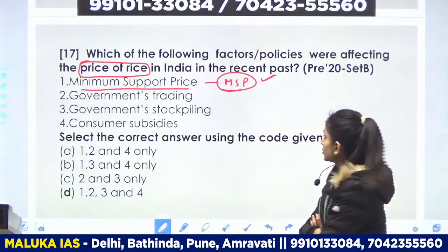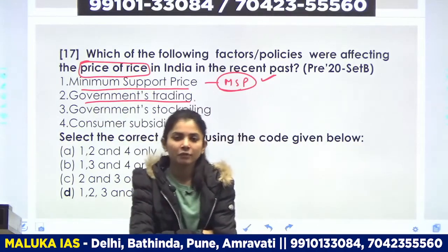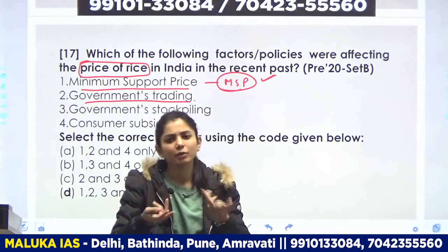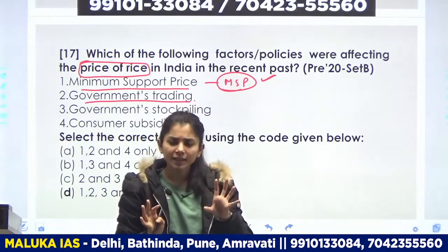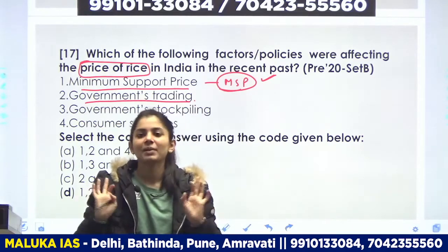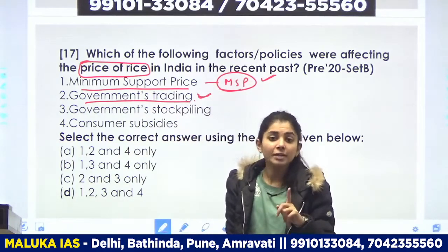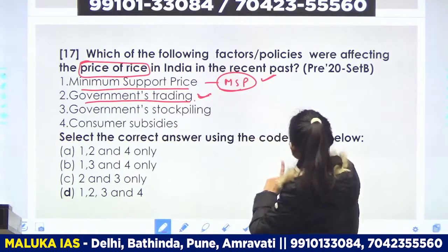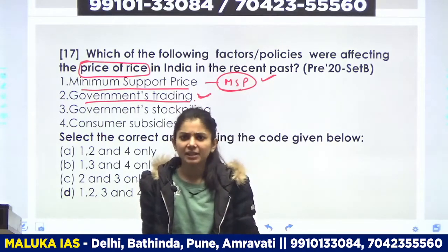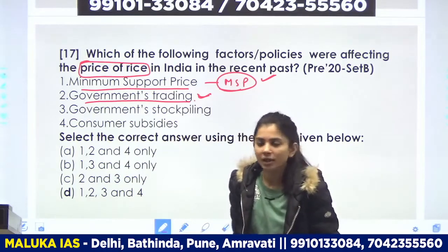Next aata hai: government trading. Government trading kar rahi hai — goods jaise crops — toh ab jo government yeh trading kar rahi hai, iska effect market forces par aayega, demand and supply par. Jab demand and supply par effect aayega, toh usse price effect hoga. Inhone humse yeh nahi poocha ki price increase ho raha hai ya decrease — inhone poocha hai price par effect kiska aayega. Trading ka effect aayega — whether government kare ya bulk dealers karein, effect hoga.